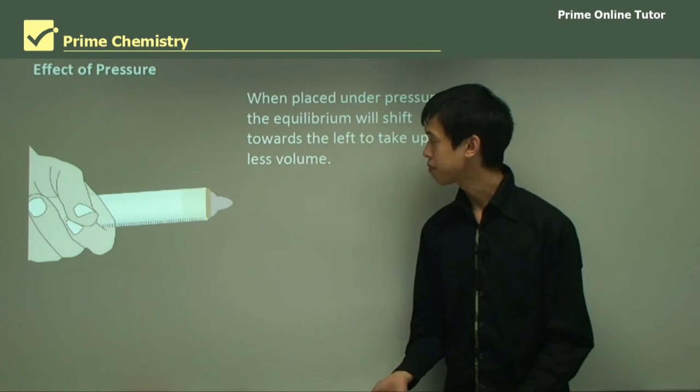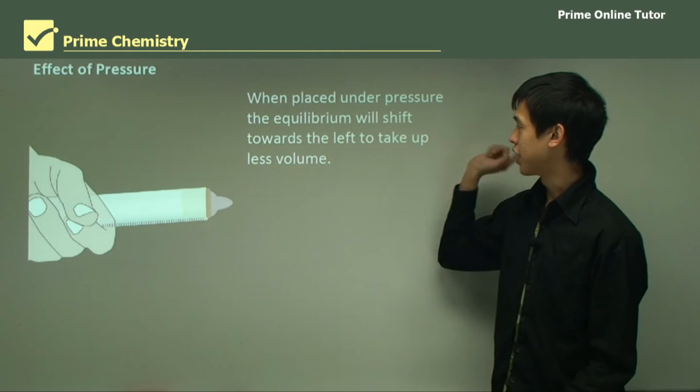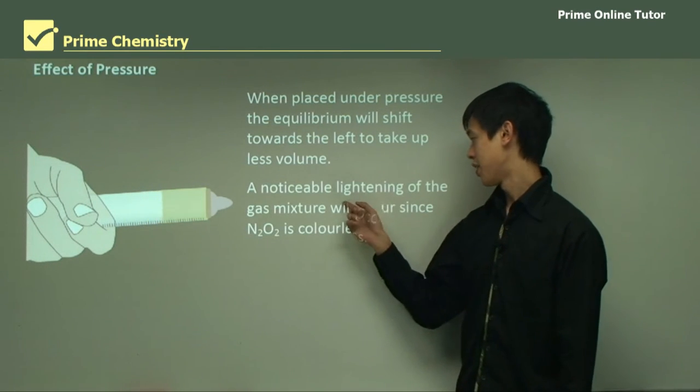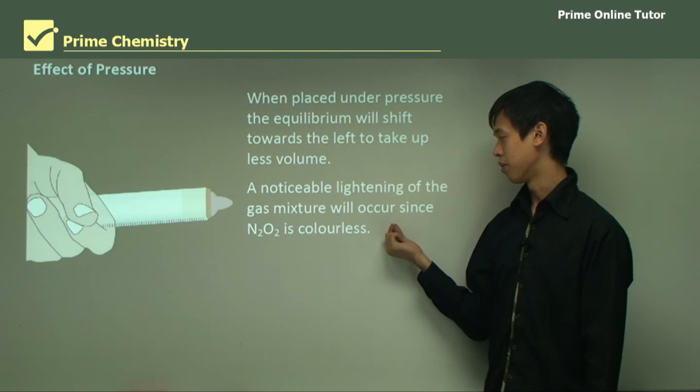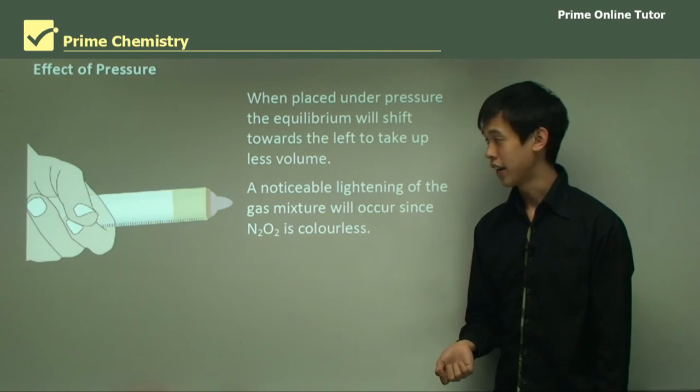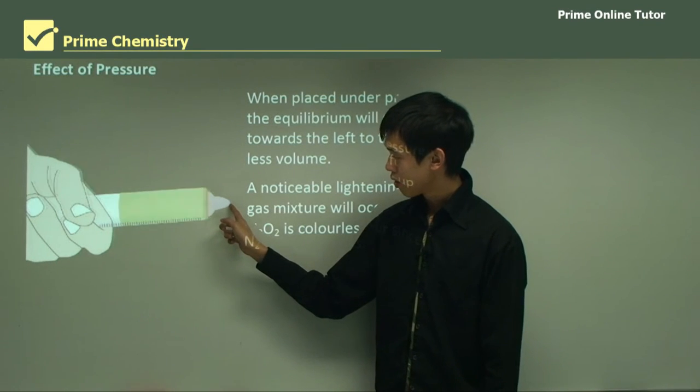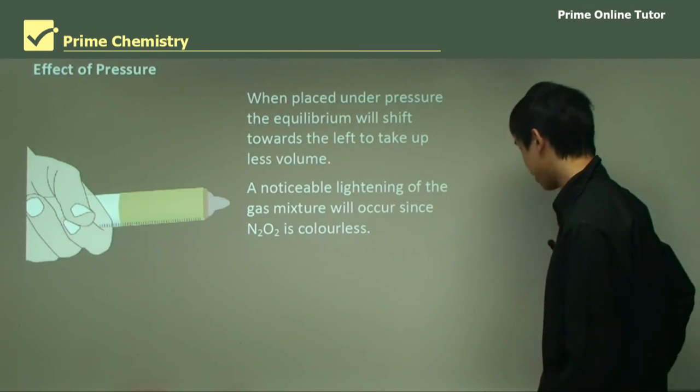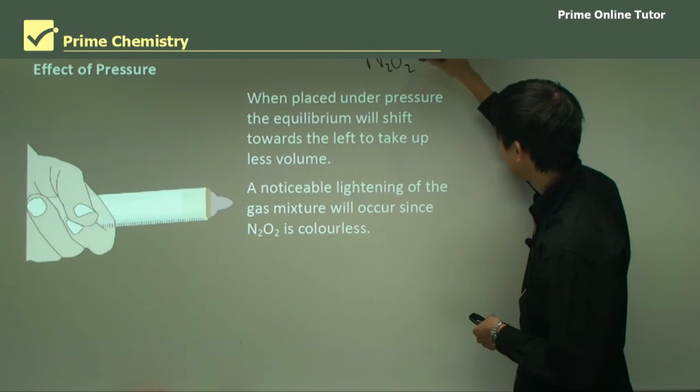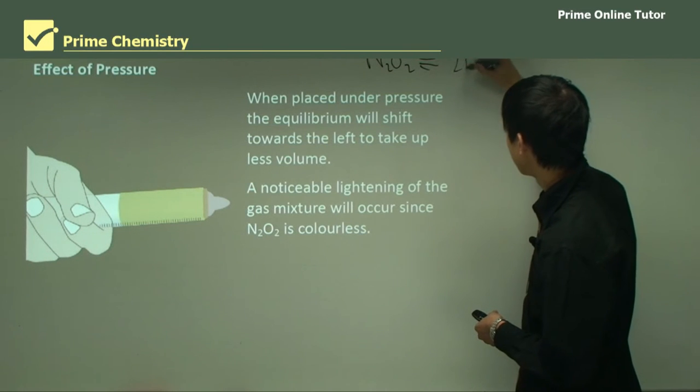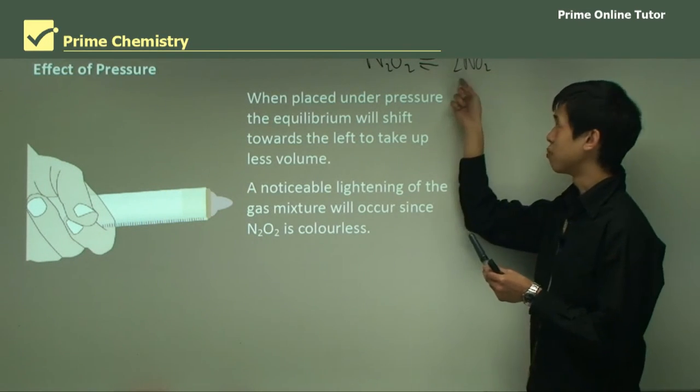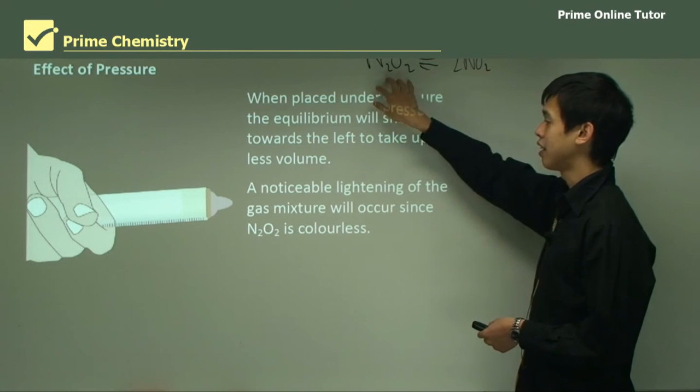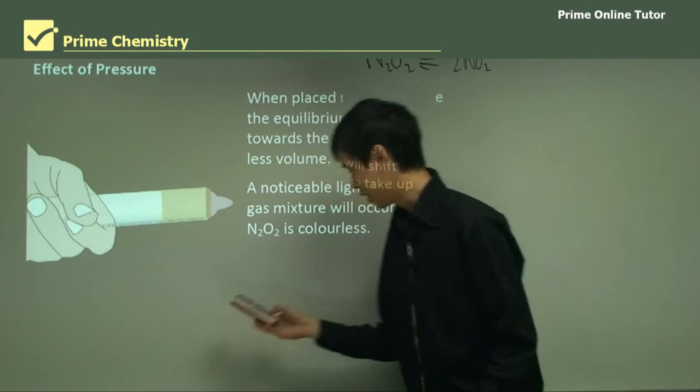So let's look at the effect of pressure. When placed under pressure, the equilibrium will shift towards the left to take up less volume. So what we'll notice is a noticeable lightening in the gas mixture, since N2O4 is colourless. So if this is a blocked syringe, we start here, it's brown. And as he puts more pressure on it, it eventually turns clear. Because remembering that the equilibrium reaction is... so as we put more pressure on it, there's more moles of gas on this side. So they'll all go this way. And so it'll make sure that the chemical is clear, whereas this chemical is murky brown.